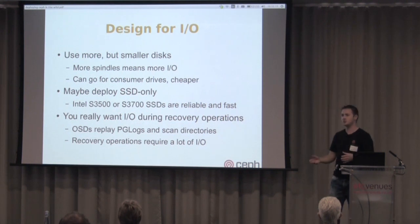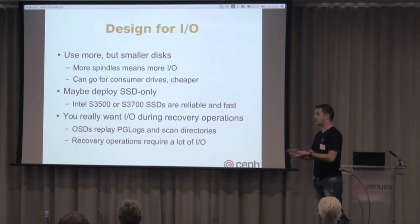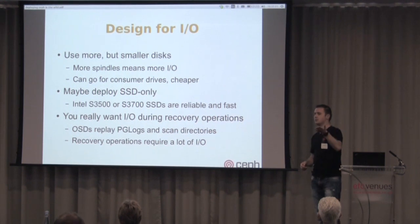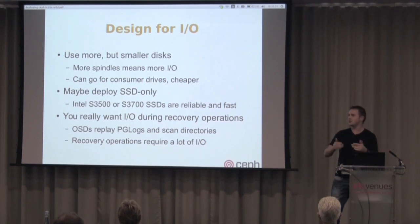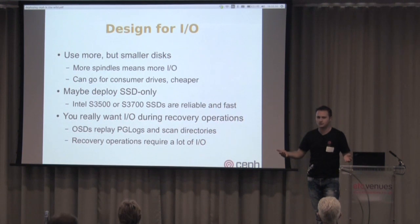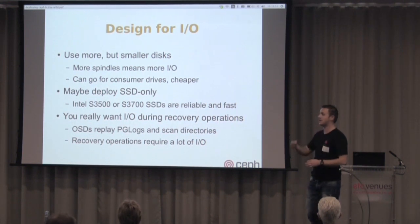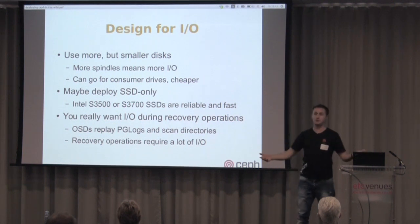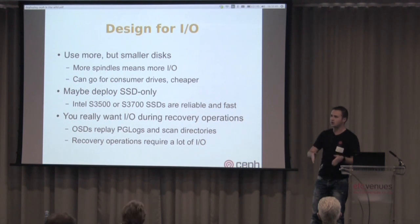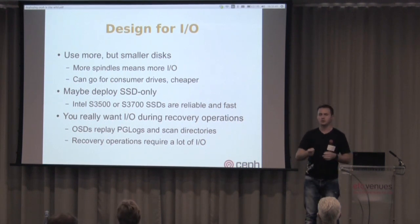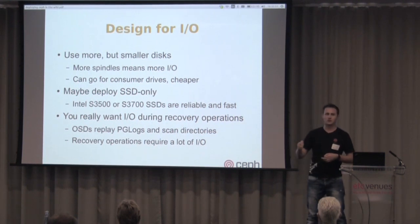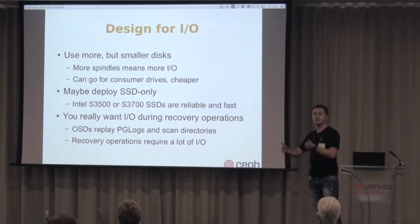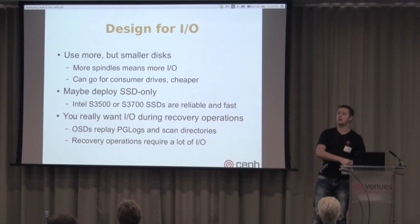This deployment is running 1,500 virtual machines all hammering the Ceph cluster. We could have gone for 2TB drives, but then you'd be tempted to fill them to 80% of 2TB. With 1TB drives, you can't overfill as much. Go for smaller drives, get more spindles, and you get more IO. You can even go for consumer drives — smaller companies accept the risk of drive failure, and Ceph is designed to mitigate failure through replication and recovery.